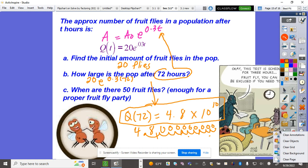Let me double check: 20e^(72×0.3). Yes, that's correct.